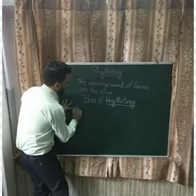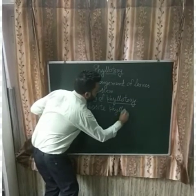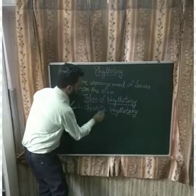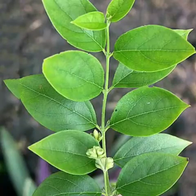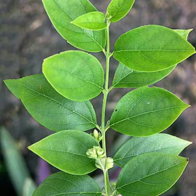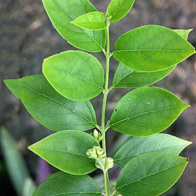The first type of Phyllotaxy is Opposite Phyllotaxy. In this type of Phyllotaxy, when two leaves arise on each node opposite to each other, the Phyllotaxy is said to be opposite.